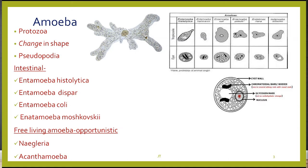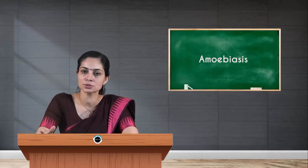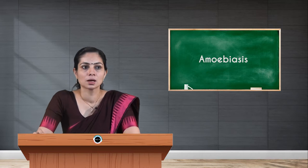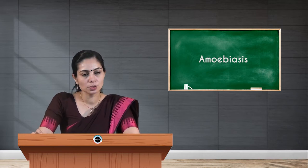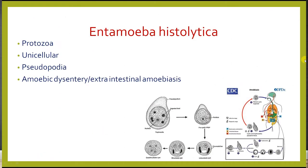Entamoeba histolytica is very actively motile with the presence of pseudopodia. There are many Entamoeba species: Entamoeba histolytica, Entamoeba dispar, and Entamoeba coli, but we will discuss only Entamoeba histolytica, which leads to human infection — amoebiasis. It is a unicellular parasite with pseudopodia. The infection is called amoebic dysentery, and in 5 to 10 percent of people, it leads to extra-intestinal amoebiasis.